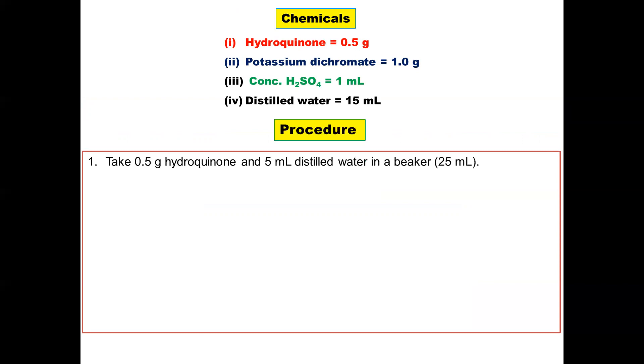Procedure: take 0.5g hydroquinone and 5ml distilled water in a beaker of 25ml. Heat on a wire gauze to obtain a clear solution.